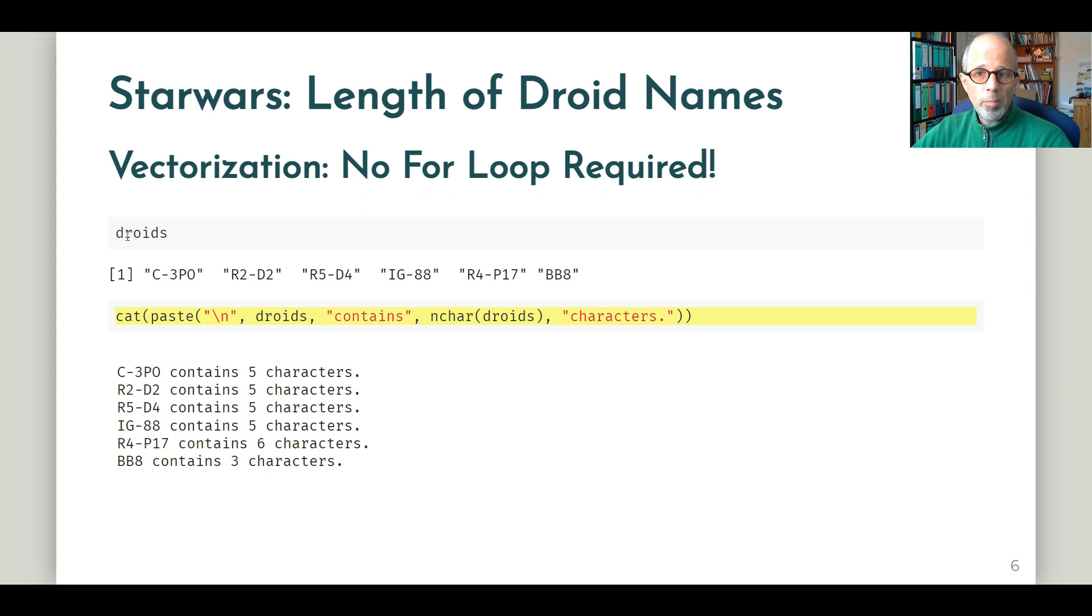To just get the names of the droids, I can simply write droids. This is short for print droids, and it gives me the six names. We get each element of this vector without us writing a loop.